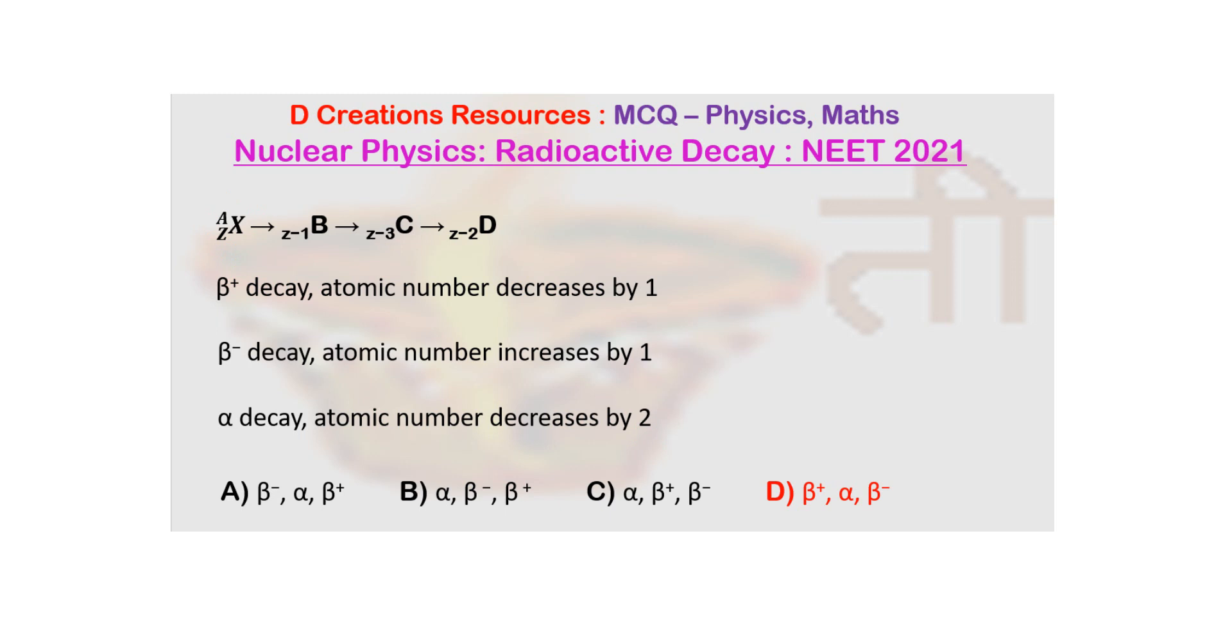Now here you can see that in the first case, from Z it is going to Z minus 1, that means atomic number has decreased by 1. So first has to be beta plus. Then from Z minus 1 it is going to Z minus 3, so that means alpha particle has to be emitted because in alpha decay, atomic number decreases by 2.